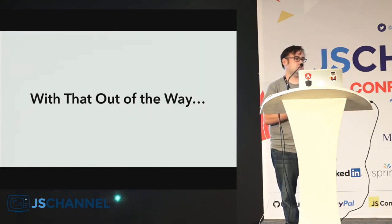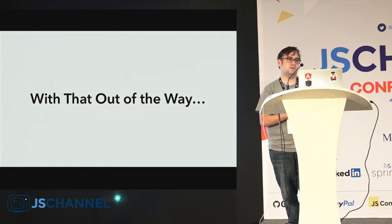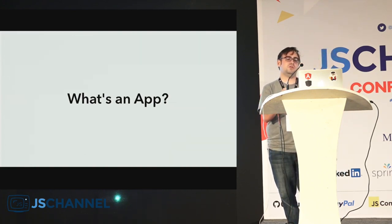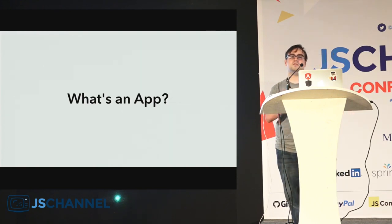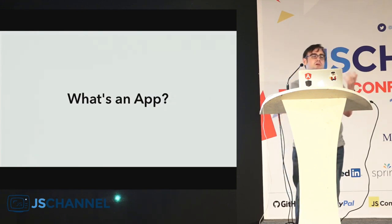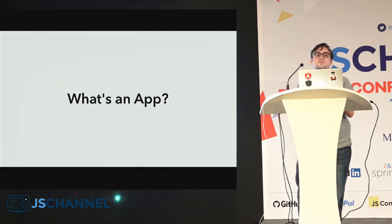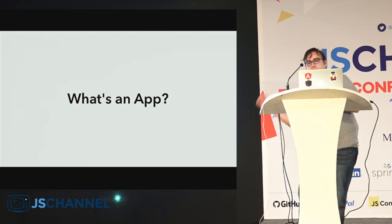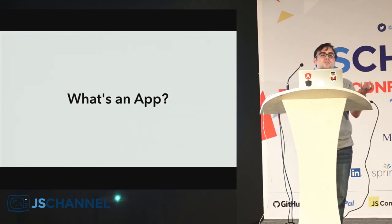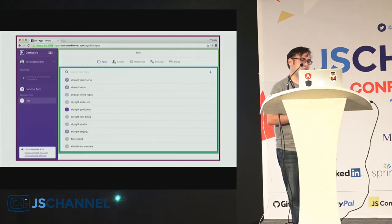With that out of the way, I want to talk about applications — what it means to write a web application today. A web application is a bit different from a native application. Native applications don't have a native way of sharing. If I'm looking at the New York Times on my phone and want to share it, I usually give you a URL to a website because it's really hard to share native applications. The navigation model is usually very custom — no links, no going from page to page. Let me take a look at the Heroku dashboard, which is an Ember app, to give you a sense of how I think about applications.